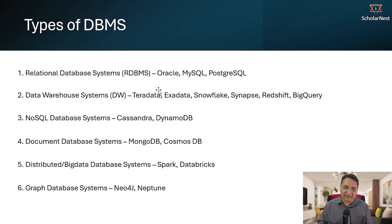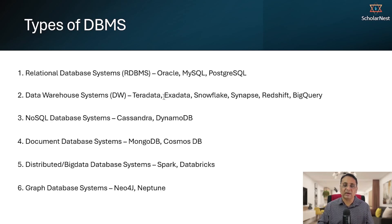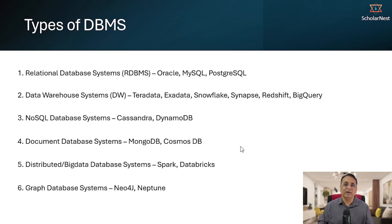For data warehouse systems, popular names include Teradata, Exadata, Snowflake, Synapse, Redshift, and BigQuery. Teradata and Exadata are available as a hardware plus software combination — you have to buy both together. The others — Snowflake, Synapse, Redshift, and BigQuery — are available in different cloud platforms.